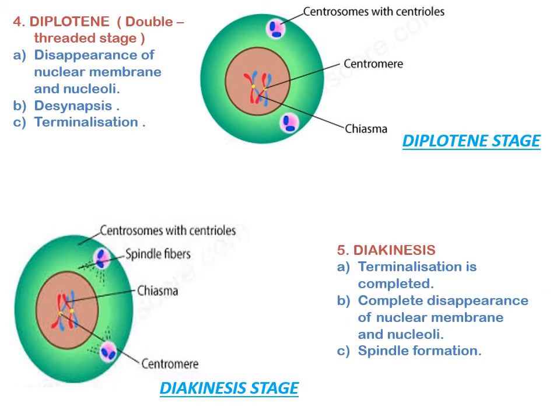The diplotene stage of prophase 1 is also known as the double threaded stage. Here there is disappearance of the nuclear membrane and nucleoli, and de-synapsis or separation of homologous chromosomes begins due to dissolution of the synaptonemal complex. The separation is however not completed; they remain attached at one or more X-shaped points called chiasmata, where crossing over occurs. The number of chiasmata depends on the length of the chromosome.